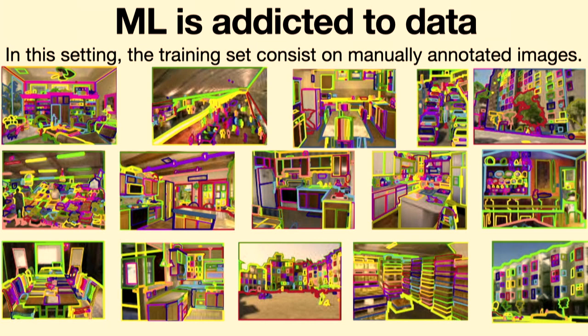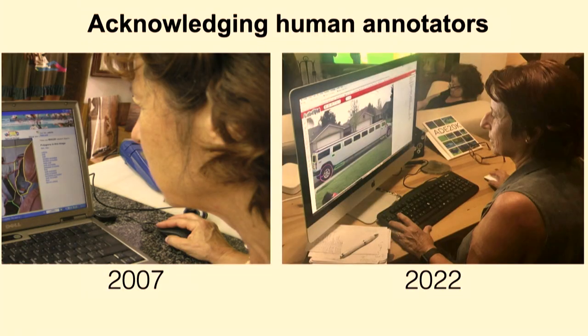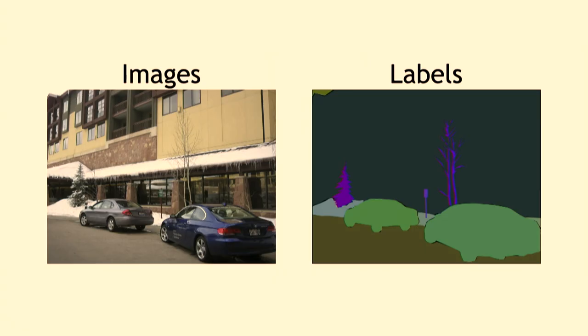Who are the people annotating all these images? I know one person — that is my mother. She's been labeling images since 2007 and has labeled like a million objects. She's probably the most experienced human annotator out there, and her data has been used to train some of the machine learning systems being used nowadays.